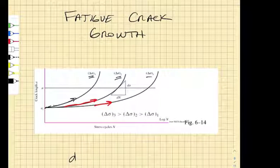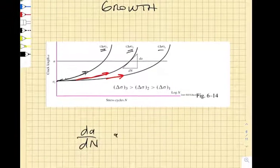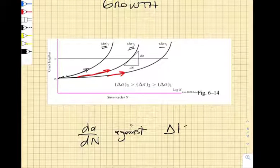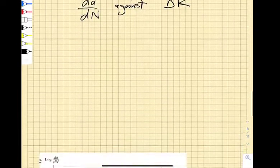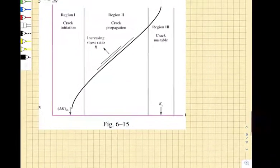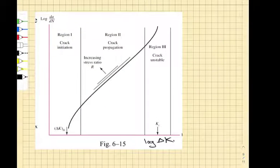But if you take and plot the slopes of these things, so if you plot dA, dN against delta K, you get a very interesting relationship. We find that we get a power law relationship and there's a threshold delta K below which we won't get any crack growth.